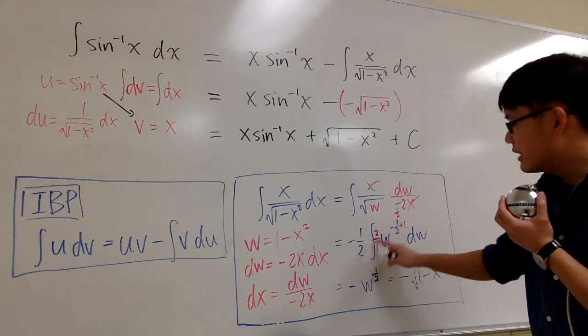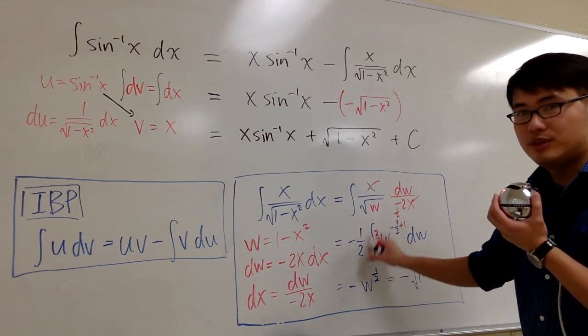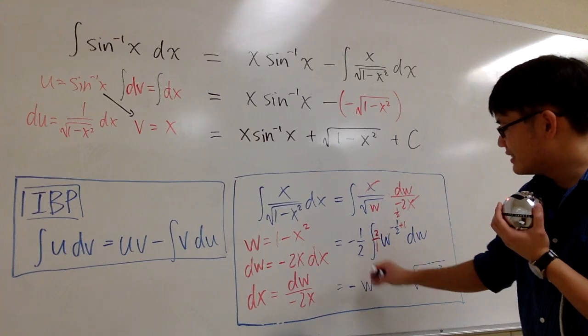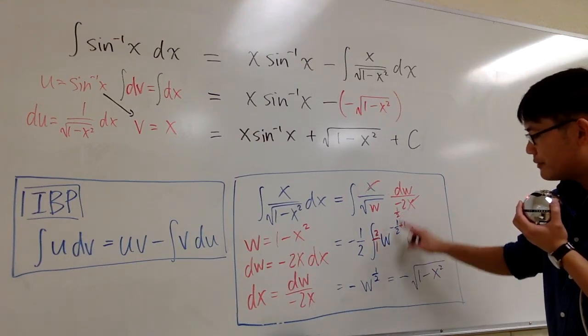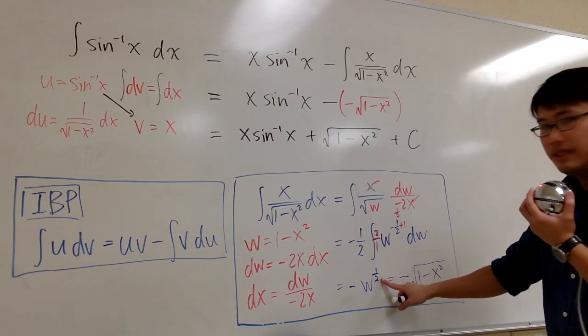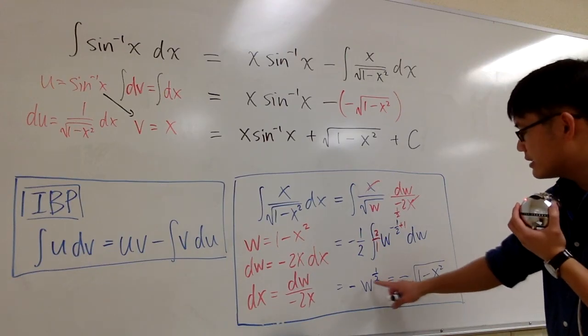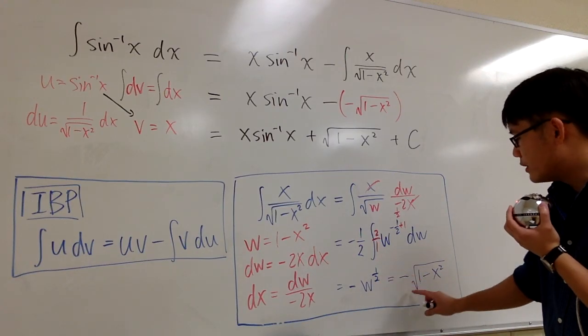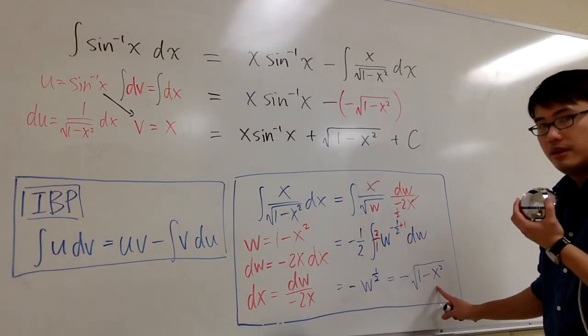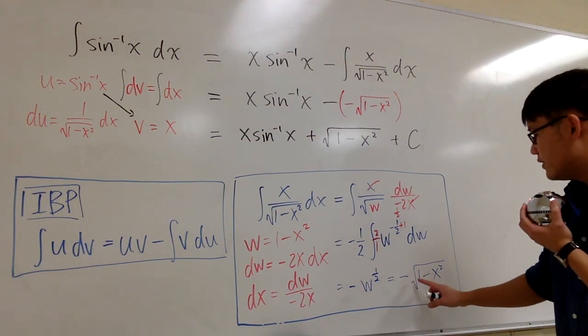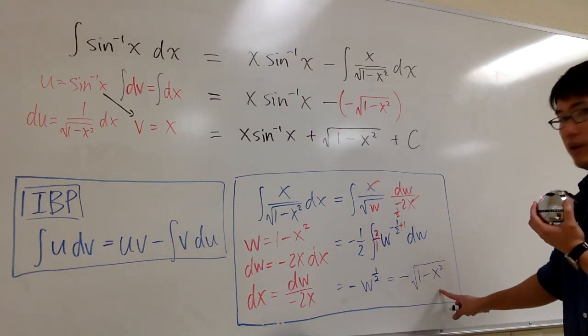So as you can see we have the negative. But then 1 half times 2 over 1 is just 1. So they cancel out. And then we have w raised to the 1 half power. And that's it. But then we can write this back as negative. The 1 half power is the square root. And the w is 1 minus x squared. So altogether, this integral is just negative square root of 1 minus x squared.